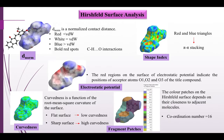In shape index, the appearance of red and blue triangles indicates the presence of pi–pi stacking, which is also confirmed by curvedness by flat areas on the mapped surface. The red regions on the electrostatic potential surface indicate the position of acceptor atoms O1, O2, and O3 of the title compound. Curvedness is a function of the root mean square curvature of the surface, with flat areas having low curvedness and areas of sharp curvature having high curvedness. The color patches on the Hirschfeld surface depend on their closeness to the adjacent molecule, and hence the coordination number was found to be 16 for the title compound.